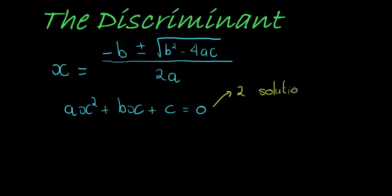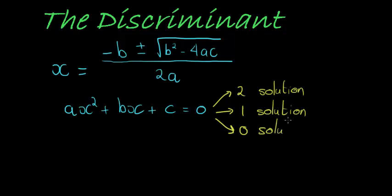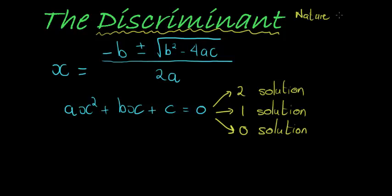Or we can have one solution — only one x to solve this equation. Or we can have no solutions, zero solutions. The discriminant is what is going to tell us about the nature of our roots. The nature of the roots — roots is just the solution of an equation, the nature of the solution.